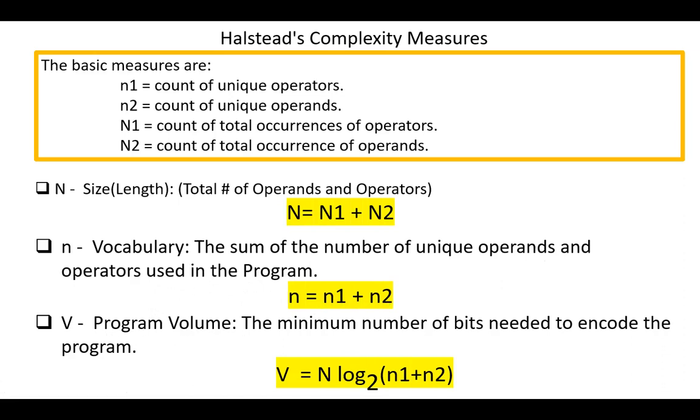V, program volume, the minimum number of bits needed to encode the program. V equals capital N log base 2 of small n1 plus small n2.